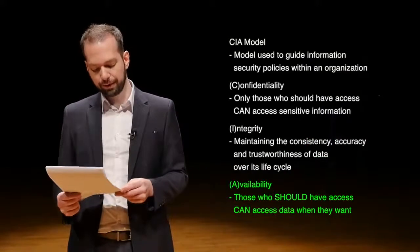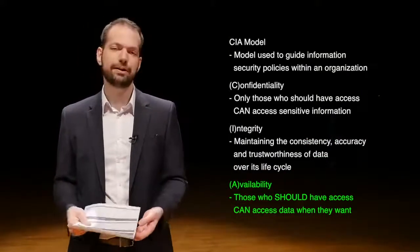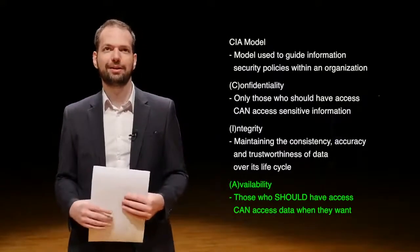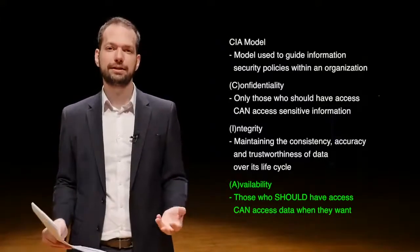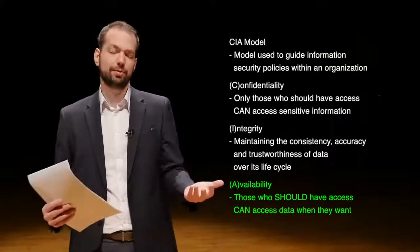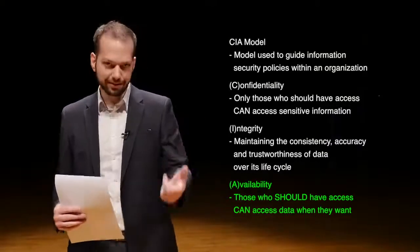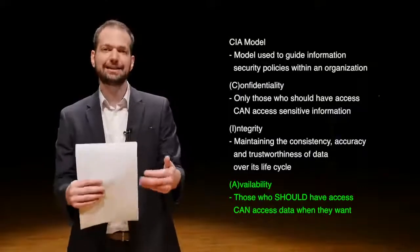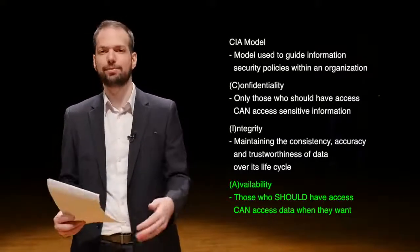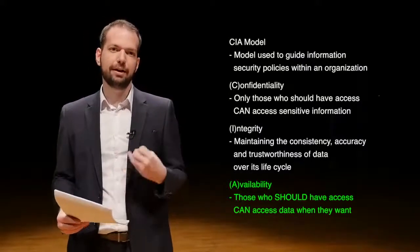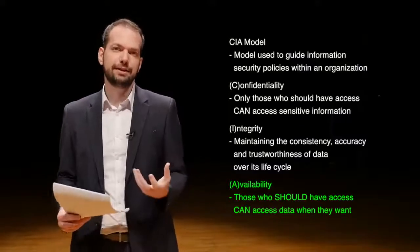And Availability — those who should have access can access data whenever they want. The most well-known way that availability is attacked is through denial of service attacks. If you want to stop people from accessing a website that they should be able to access, you do a denial of service attack and bring the website down. So confidentiality, integrity, availability — information security is trying to maintain all three of those things. All three require some balance, and you can't necessarily have all of them at the same time, but you should think about all of them when securing data.